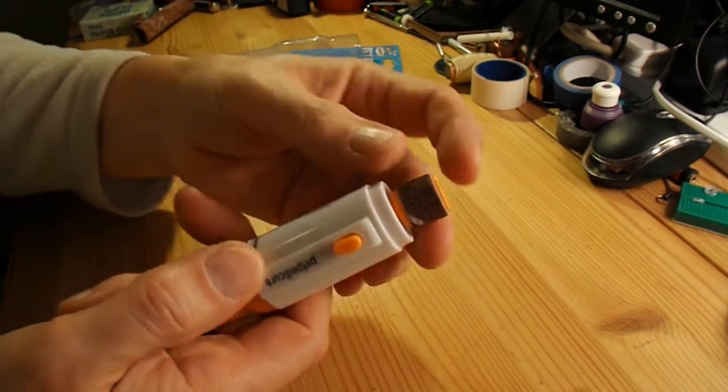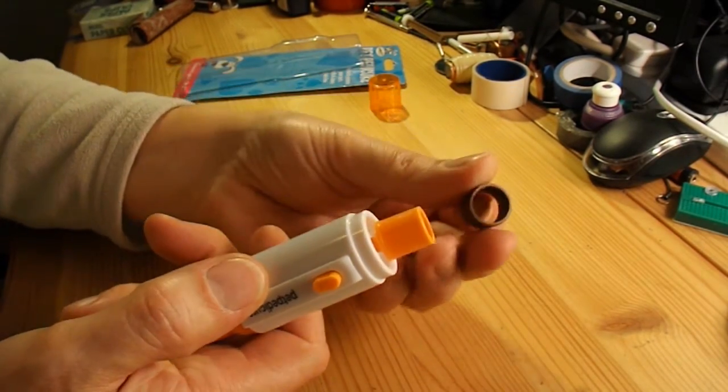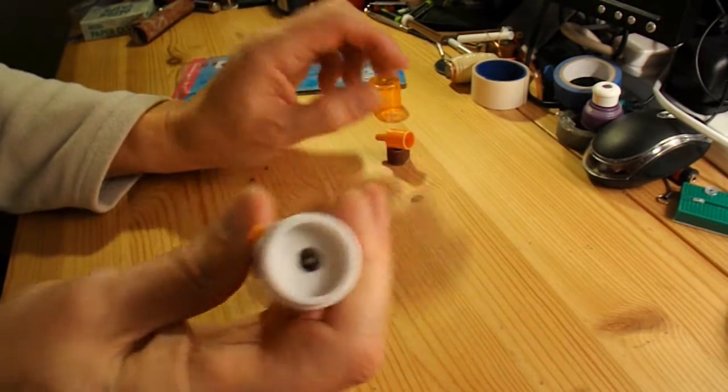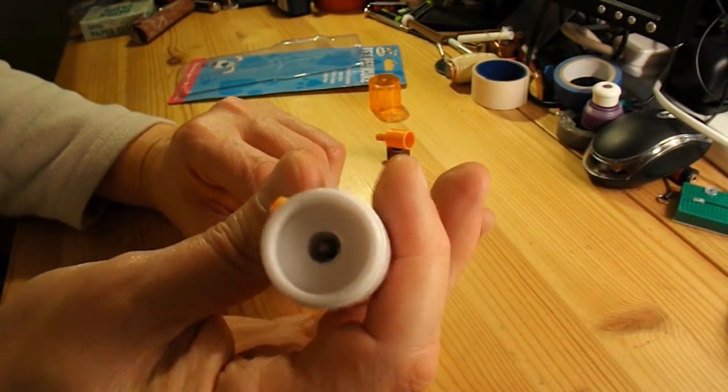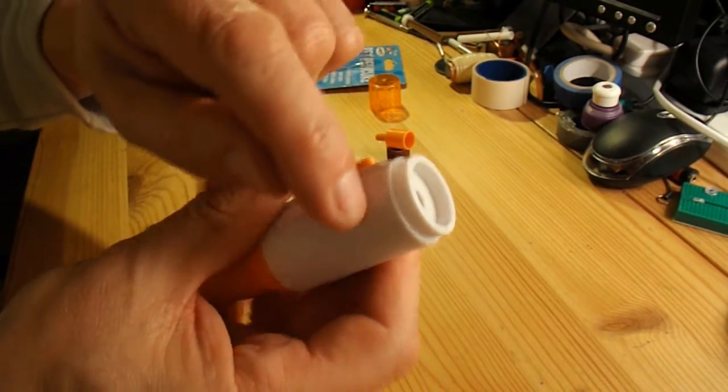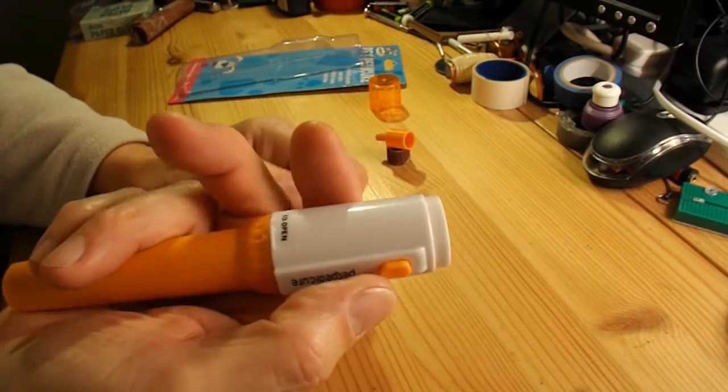The first thing I've found is it comes apart nice and easily. That just slides off, and that pulls off. So that means if we want to get to the electric motor or to the shaft, we've got to cut quite a bit of the plastic off in the usual way.